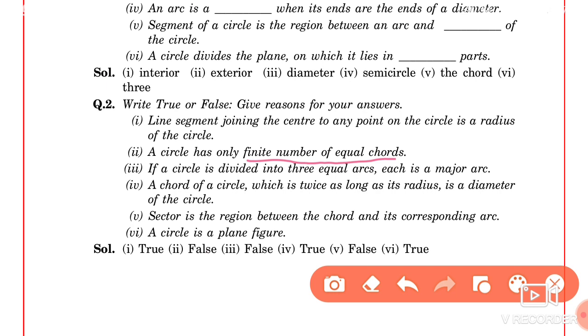Okay, if a circle is divided into three equal arcs, each is a major arc. What we have is a circle that is divided into three arcs. Here is the first arc, here is the second arc, and here is the third arc.